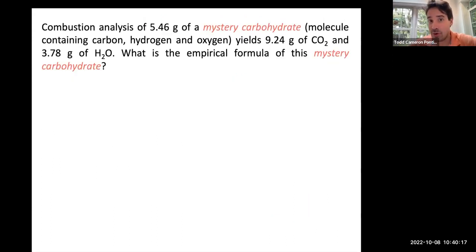Now then, let's do combustion analysis of a mystery carbohydrate, a molecule containing carbon, hydrogen, and oxygen. In this problem, we're told that we start with a 5.46 gram sample, and it yields 9.24 grams of CO2 and 3.78 grams of H2O. And once again, we're trying to find the empirical formula. As with any combustion analysis problem, we're always going to start by finding the moles of carbon using the CO2, or the moles of hydrogen using the H2O. Or if we have both, we'll find both.